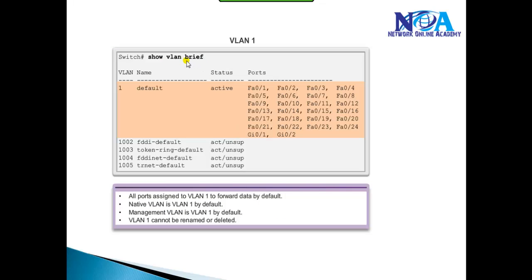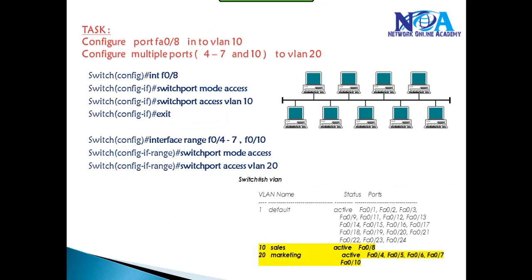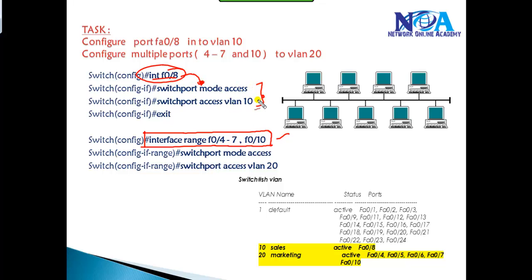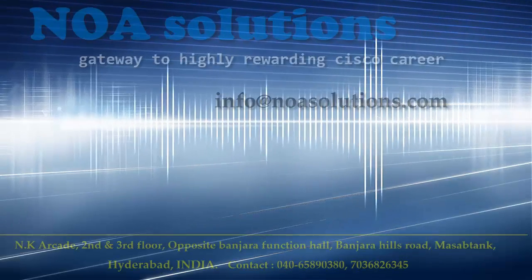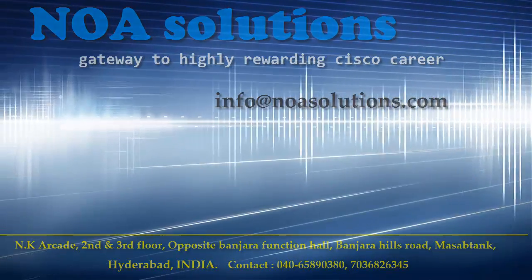For verification, we can use either 'show VLAN' or 'show VLAN brief'. That's what we did for creating VLANs and shifting ports. When shifting multiple ports, I recommend using the range command. If you only have one port, there is no need for the range command — just go to the interface and use 'switchport mode access' and 'switchport access VLAN' followed by the VLAN number.